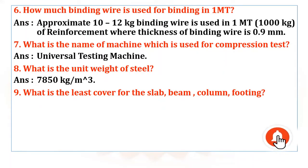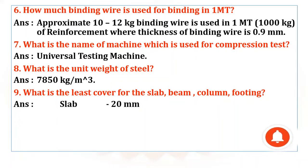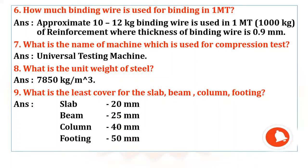Coming to the next question: What is the least cover for slab, beam, column, and footing? For slab, the least cover is 20 mm. For beam, it is 25 mm. For column, 40 mm. And for footing, 50 mm. This is the least cover provided while designing slabs, beams, columns, and footings, as per IS 456-2000 code provisions.